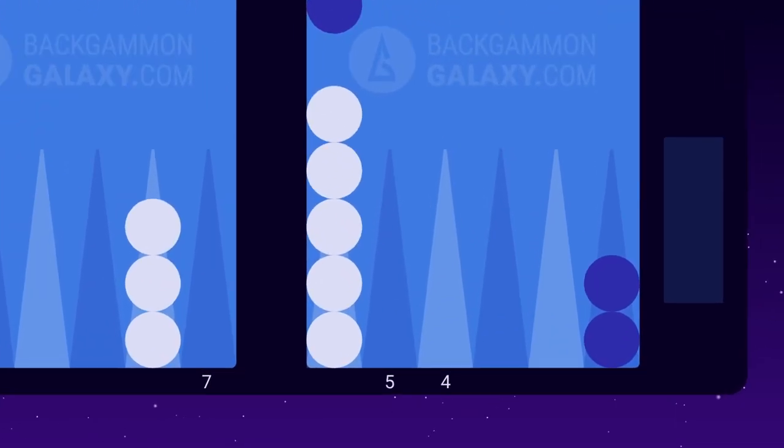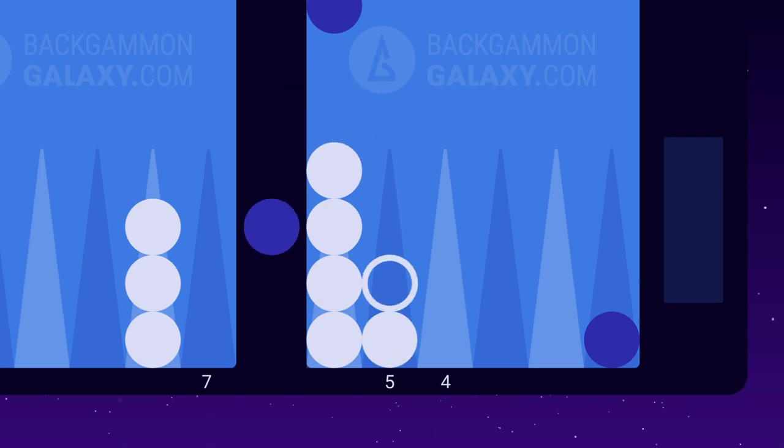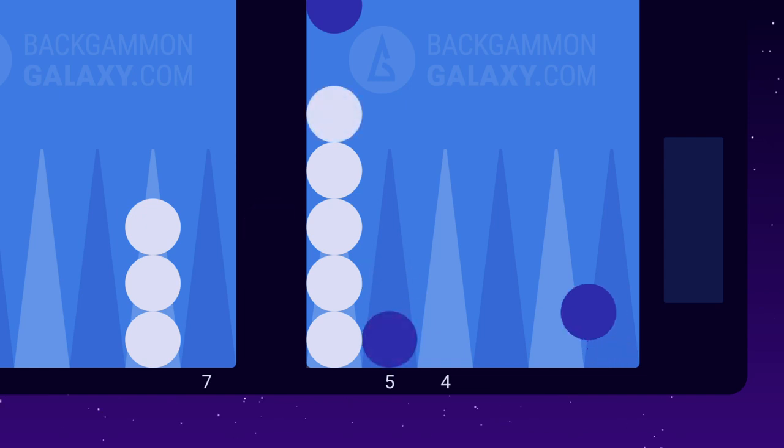If your opponent places a checker on one of your key points in the opening game, you must fight for this point by hitting it, even though you might not be able to cover your blot in the same roll. You're trying to prevent your opponent from making an advanced anchor and to make the key point yourself.